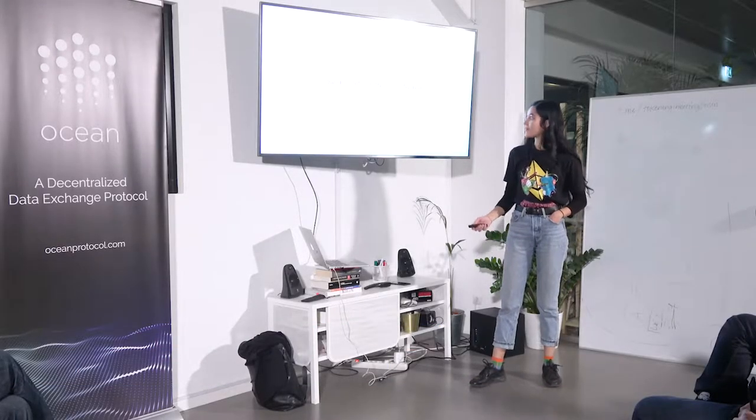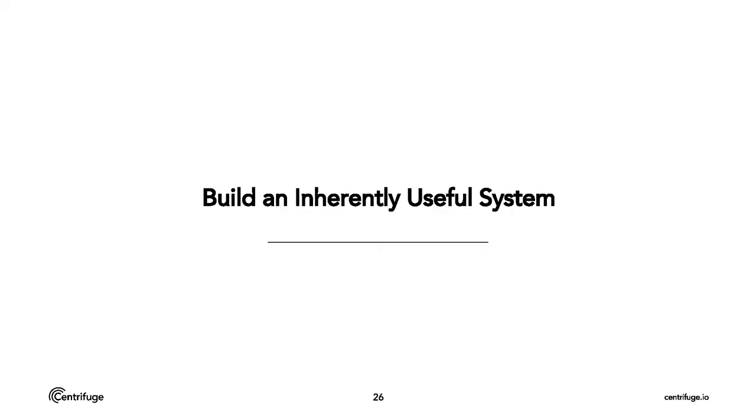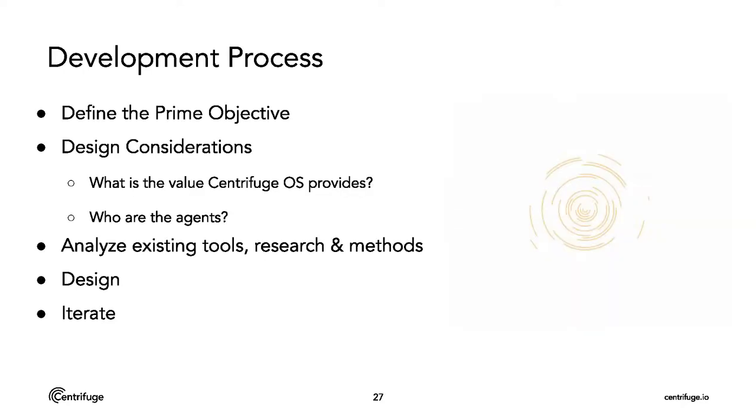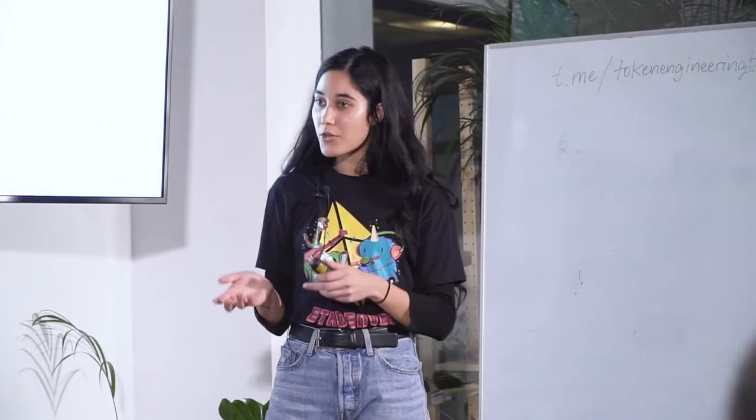So, the token. Our goal for the token is to build a system that is inherently useful. What does that mean? Really creating something that our users want to use, not just having a token as this carrot drawing users to a system. I have a solution to a problem you don't actually have — here's a token to try to use this. Our goal is really to create something that's useful first, which is why we actually launched without the token to begin with, and then added the token.